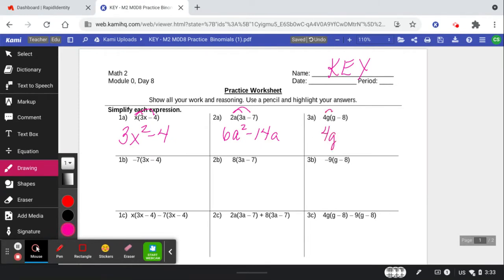4g times g. 4 times negative 8. How'd you do on that one? So pause the video at any time and go practice some on your own and then see how you do. All right, let's see how you did. Negative 21x. Careful on the signs on this one. What's a negative times a negative going to give me? You got it. Plus 28.